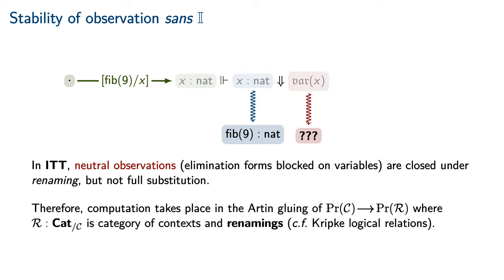Therefore, in each computational situation, one isolates a category of contexts and substitutions under which those observations are closed. In this case, that is the category of contexts and renamings. Then, computation occurs in the Artin gluing of the base change functor induced by the structure map from contexts and renamings into contexts and substitutions. This arrangement is sometimes referred to as Kripke logical relations or Kripke relations of varying arity.